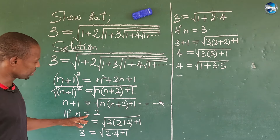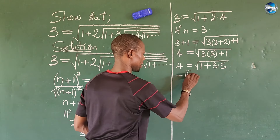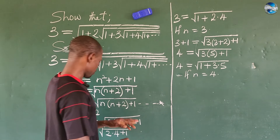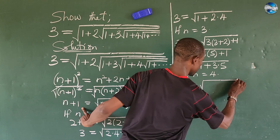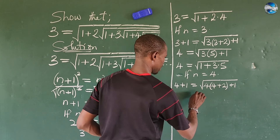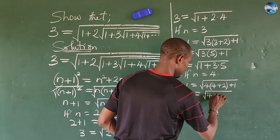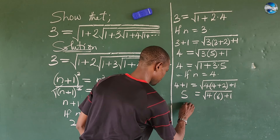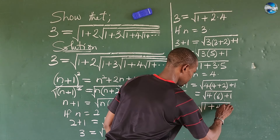Now what if we take n equal to 4 from this same equation star? From here, if n equals 4, we're going to have 4+1 equals the square root of 4 into (4+2) plus 1, which gives us 5 equals the square root of 4 times 6, plus 1. So again, if we rearrange this, this gives us 5 equals the square root of 1 plus 4·6. The pattern is playing out now.